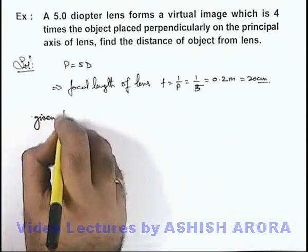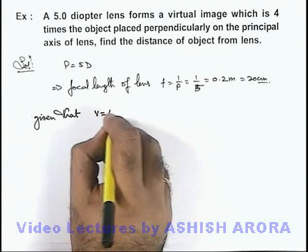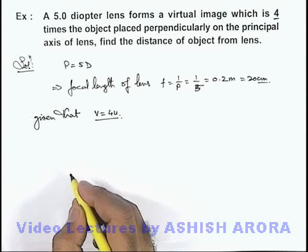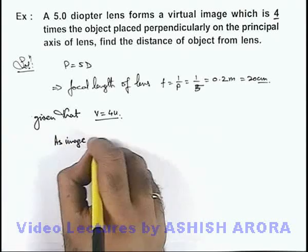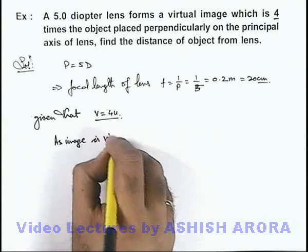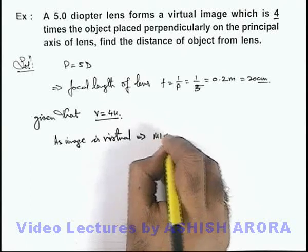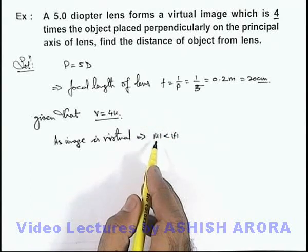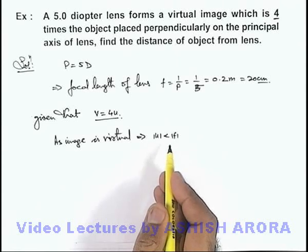And it is also given that in this situation v equals 4u because we are given that magnification is 4. And here we can see, as image is virtual, this implies object distance is less than the focal length of the lens. When object is placed between pole and focus of a lens then only its image is enlarged and virtual.